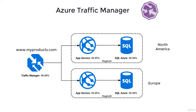That's where Azure Traffic Manager comes to our rescue. It allows you to control the distribution of network traffic to endpoints running in different data centers around the world. Traffic Manager does that by using DNS to direct end user requests to the most appropriate endpoint — meaning the one closest to the end user or as configured in the Traffic Manager.